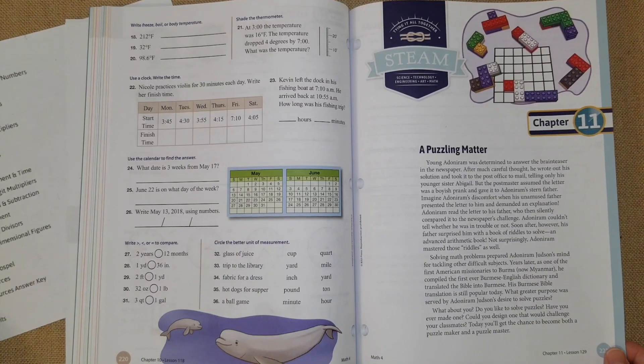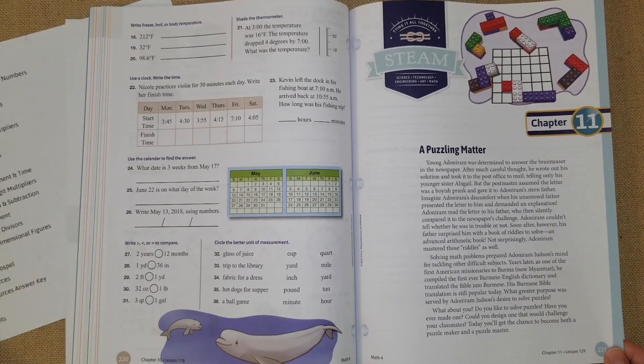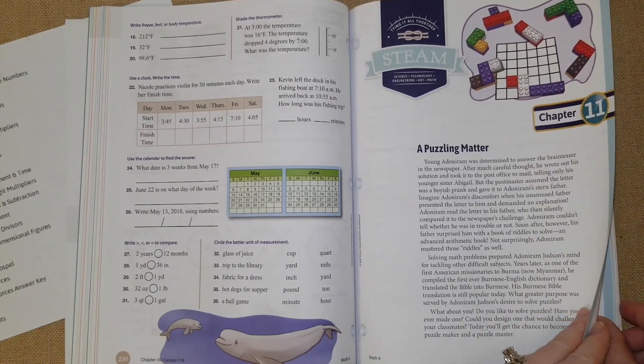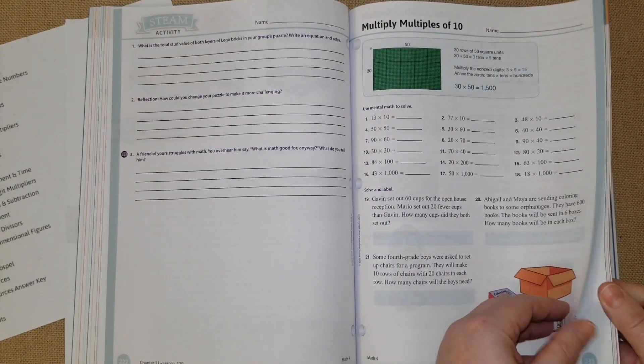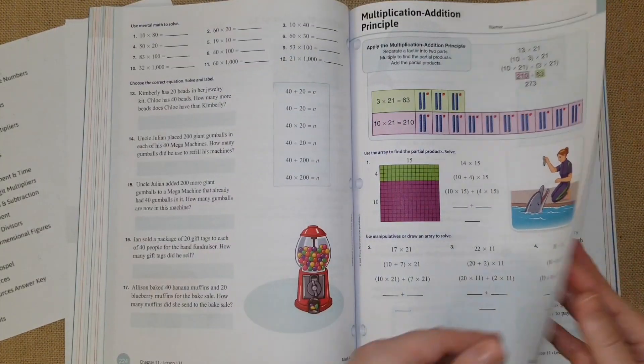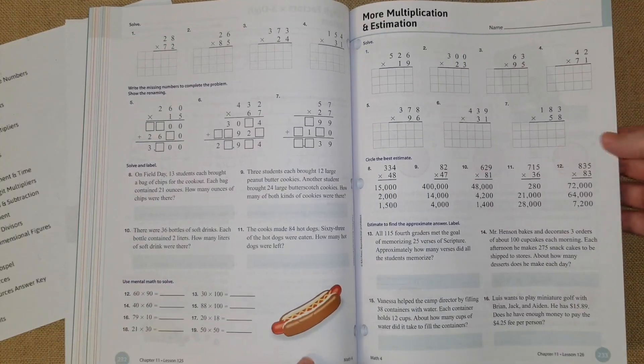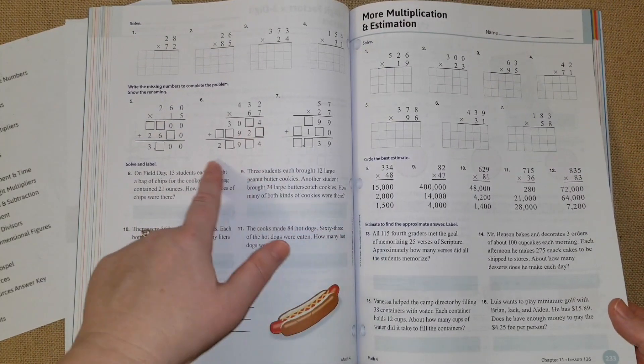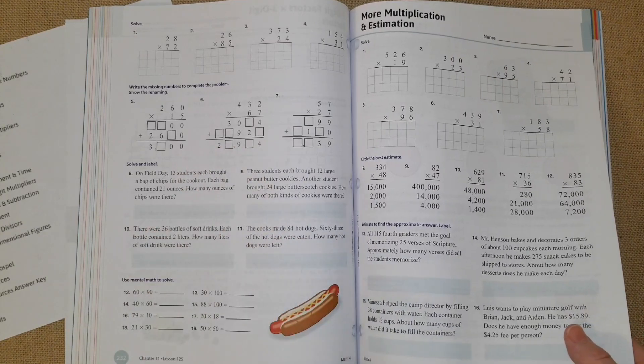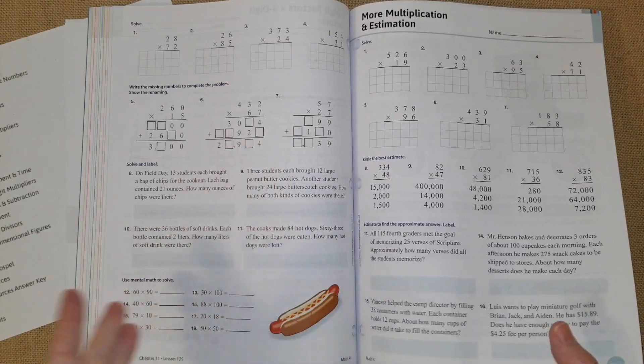Chapter eleven is multiplication by two digits. I like how they have the graph paper and those missing numbers in here, so they give you some of the answers to kind of help you out with a long multiplication problem.